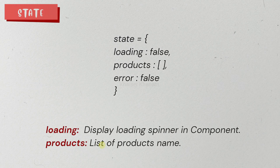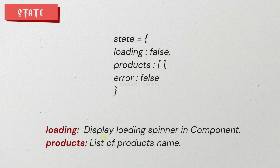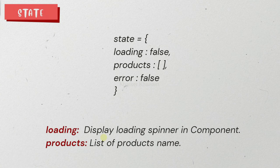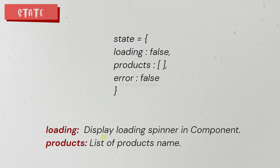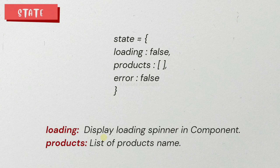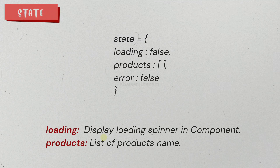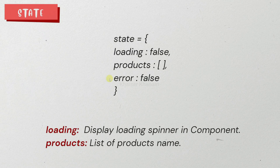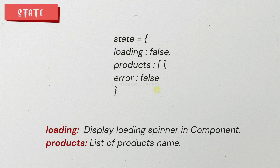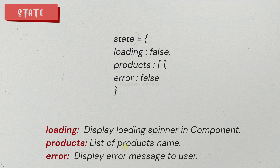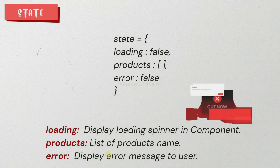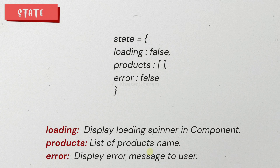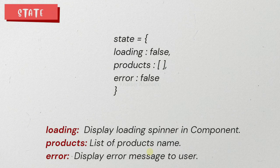The third property is error. Initially we are not going to have any error. We first start fetching the data, and only if an error occurs during fetching do we display it. So initially we assign the error value as false, and using this flag we can display an error message to the user. This is how state will be represented in our application.